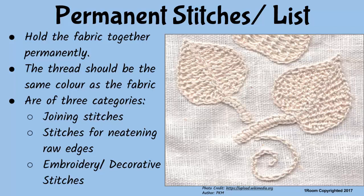Now we also have the permanent stitches. I almost forgot that I will need some stitches to hold the t-shirts in place permanently. Exactly. These stitches are grouped according to their functions. We have the joining stitches, the stitches for neatening raw edges, and the embroidery stitches. Joining stitches are used to permanently sew the fabric together.